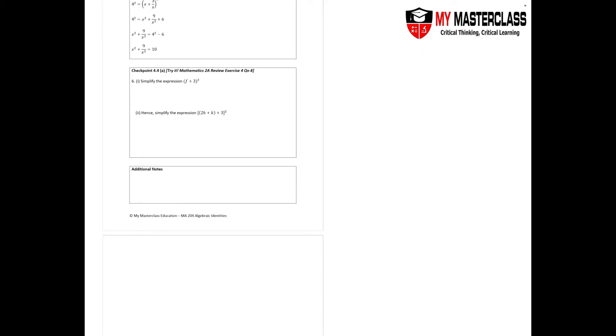In this chapter of algebraic identities, let's take a look at checkpoint 4.4 part a. In this question, they're asking you to simplify this expression, so apply your formula for (a + b)².